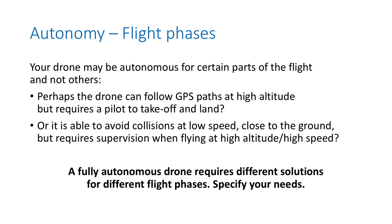You may also have different requirements regarding autonomy for different phases of your flight. For example, a drone may be autonomous when flying at high altitude and high speed, just following a GPS path and sending you information, but require a pilot to take off and land. Another type could avoid collisions at low speed close to the ground but require supervision at high altitude and high speed. So a fully autonomous drone is defined by different levels of autonomy at different phases of the flight, and you have to be specific about what you are targeting.